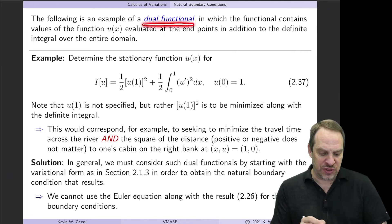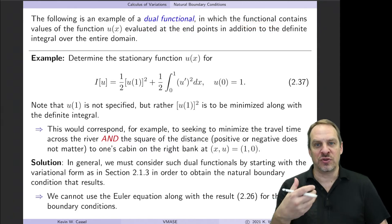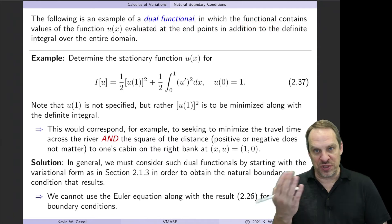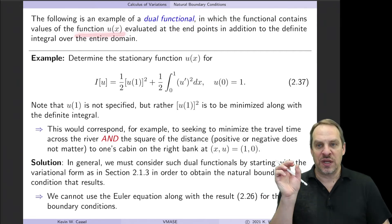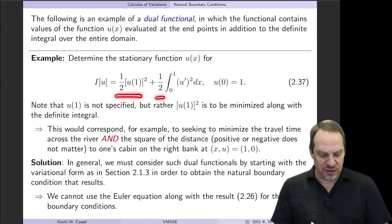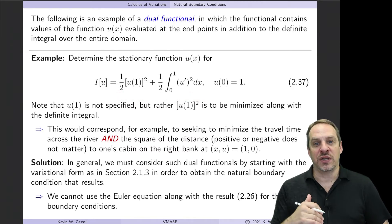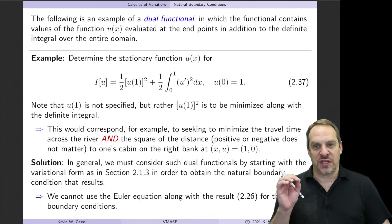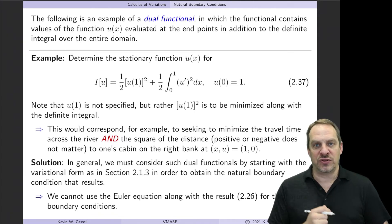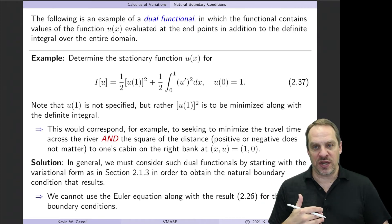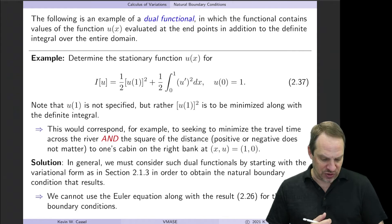This is called a dual functional, where we have our normal functional — a definite integral over the entire domain — but dual means two, so there are two pieces. We also have the function u(x) at one or more of the endpoints included in the functional. Unfortunately, we have to handle cases like this by taking the variation of i, setting it equal to zero to get the natural boundary conditions. We can't use the normal form derived in the last video, so we have to derive them from scratch by specifying that delta i equals zero.